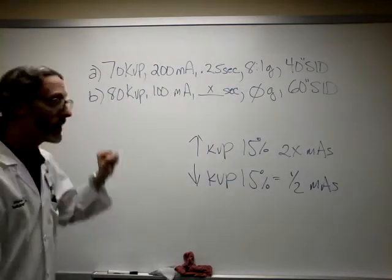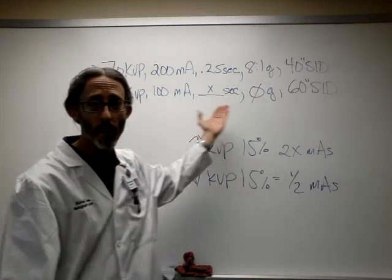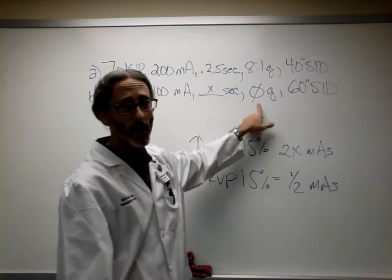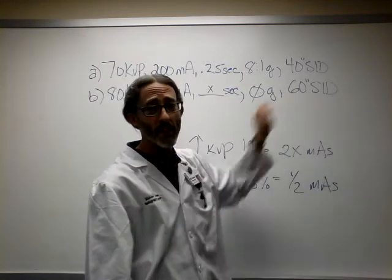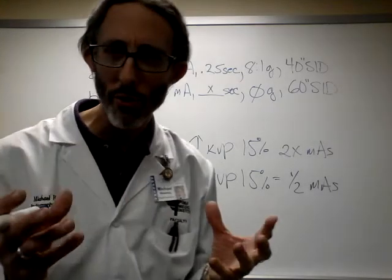Below that, technique B features 80 kVp, 100 ma, mystery seconds. We don't know the time station here. No grid and 60 inches SID. Two very different techniques. So what is our challenge?